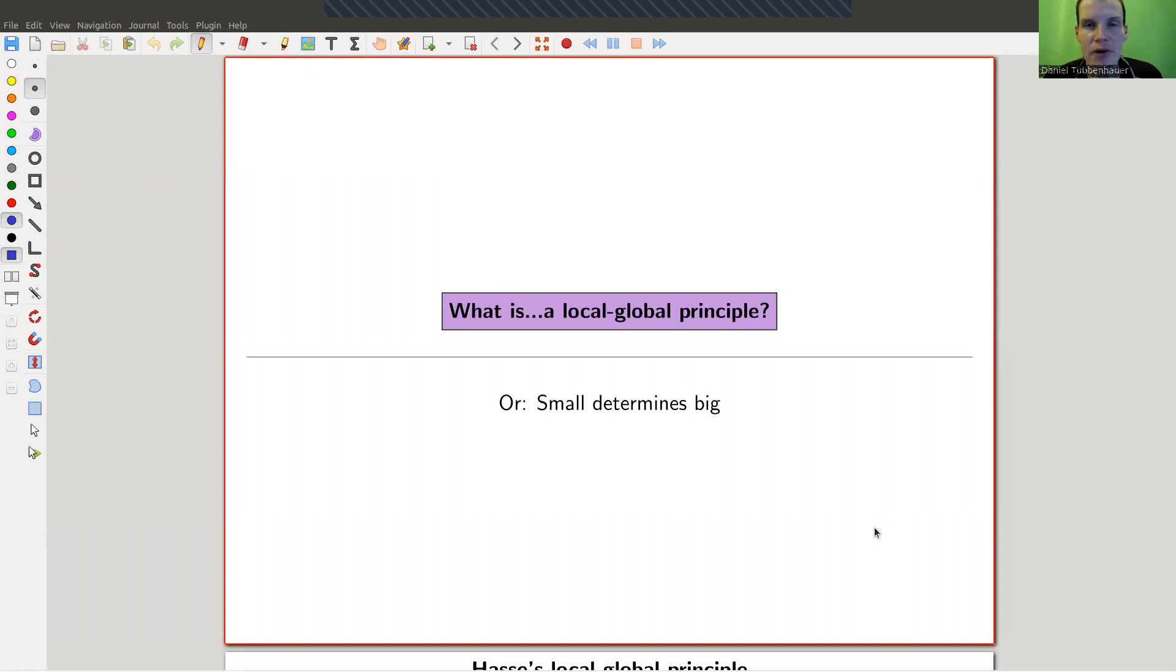Welcome everyone to my continuation of what is representation theory. Today I would like to wrap up the part I did about modular representations. One of the most important concepts in modular representation theory of finite groups is the local-global principle. So small determines big.